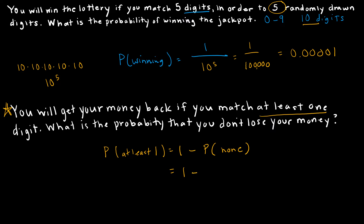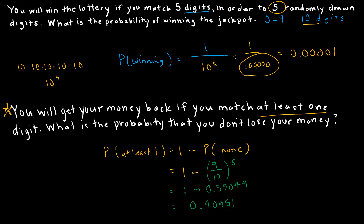So I'm going to take one minus the probability that I don't match. There are 100,000 different ways, and the probability I don't get the correct answer on each draw is nine out of 10. So really it's just (9/10) to the fifth power, or 0.9^5. That ends up giving me 1 − 0.59049, which turns into 0.40951. So there's about a 41% chance that I don't lose my money.